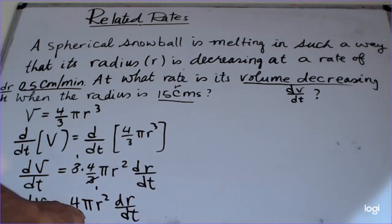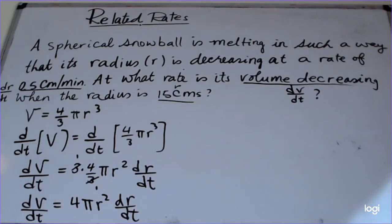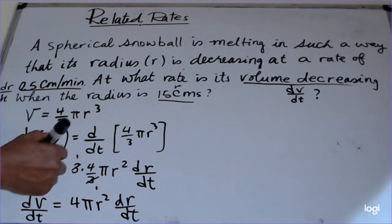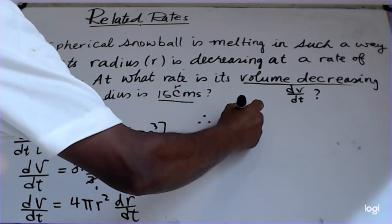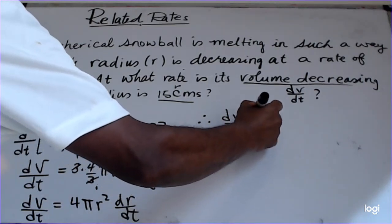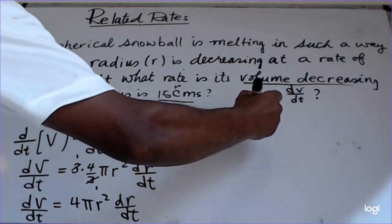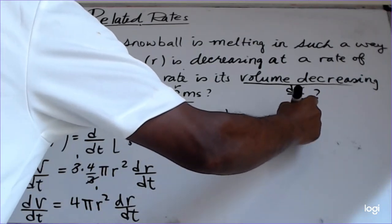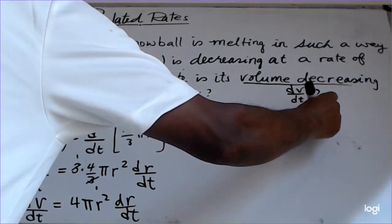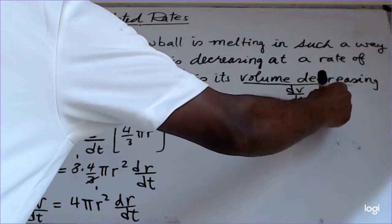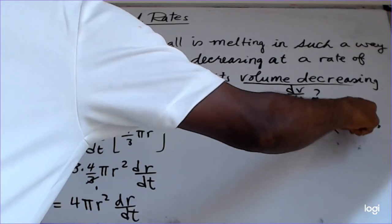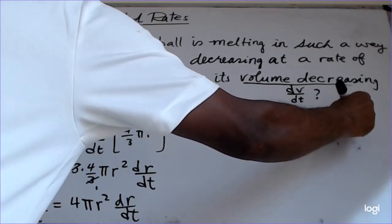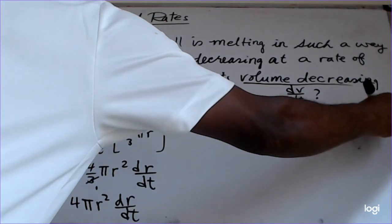Notice that on the right-hand side all of the quantities are given: r is given, dr/dt is given, so all that remains is to substitute. By substitution, dV/dt equals 4π times r = 15 centimeters, squared, times dr/dt = 0.5 centimeters per minute.